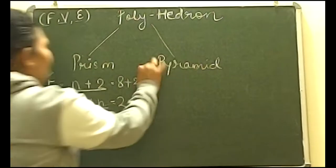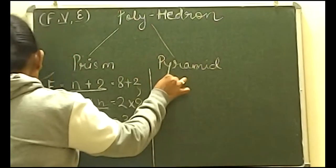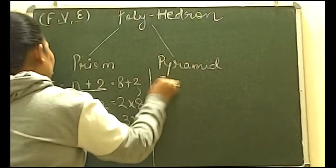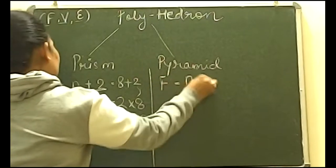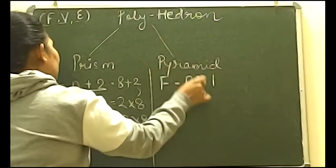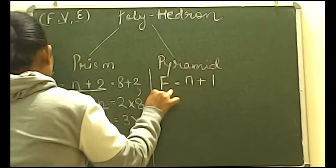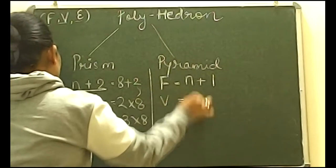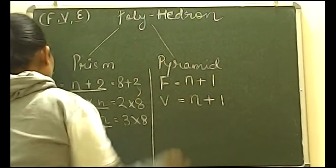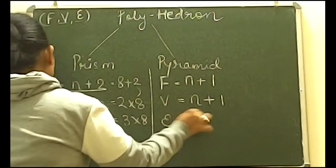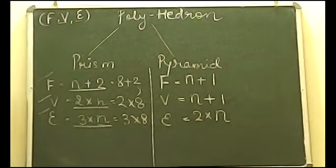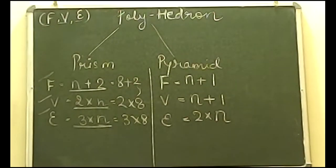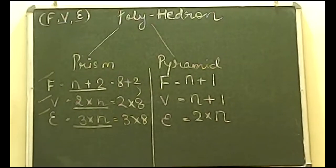The same pattern applies to pyramids. For any pyramid: Faces = n + 1, Vertices = n + 1, and Edges = 2n.